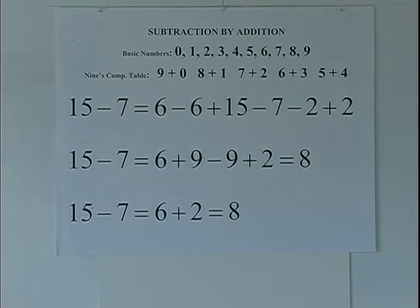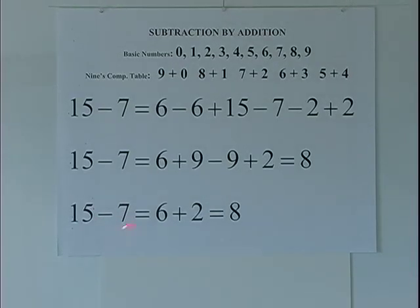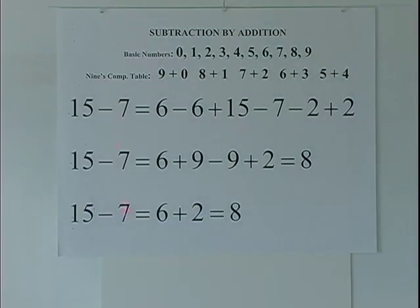We are mainly concerned with this subtrahend. So we're going to find the 9's complement. And we're always going to ask the same question: What number added to the subtrahend equals 9? In this case 2. We will always ask the same question using this algorithm. What number added to the subtrahend equals 9? And when we find it, we can do subtraction by addition.